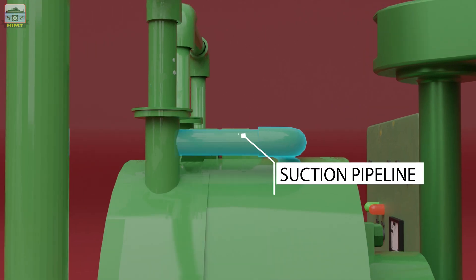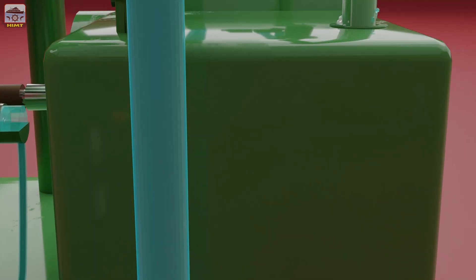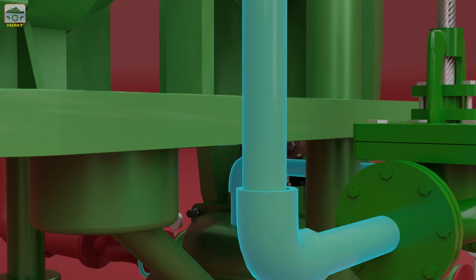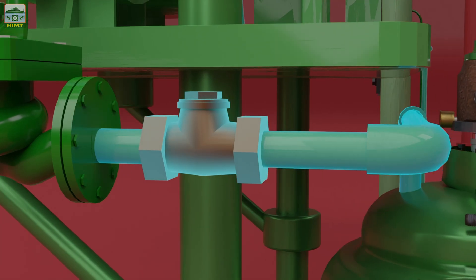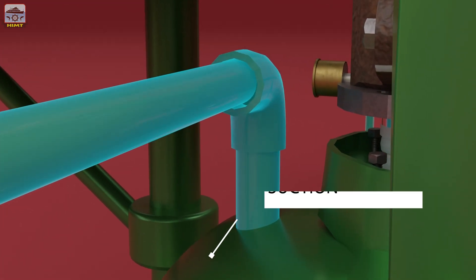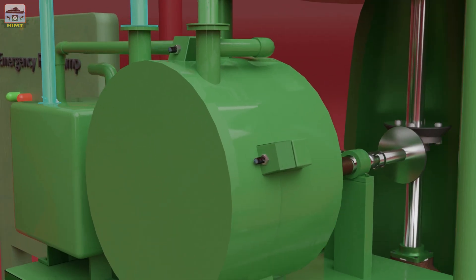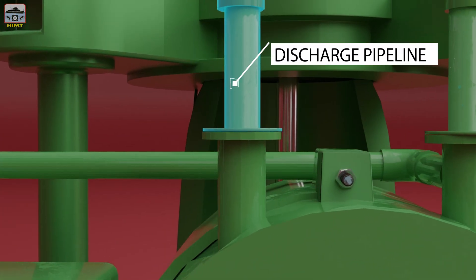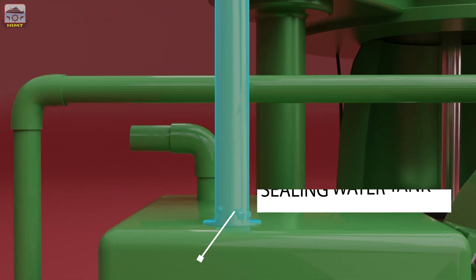The suction side of the pump is connected from the bottom of the water tank. The suction side of the pump is also connected via a non-return valve to the top of the centrifugal pump into the suction chamber. The discharge side of the pump is connected to the top of the sealing water tank.